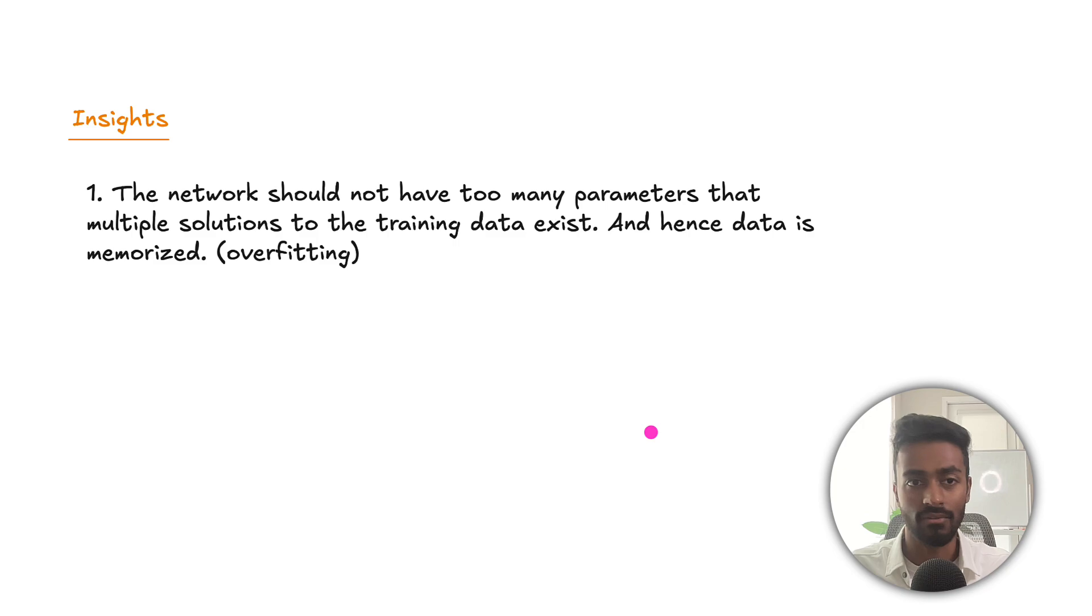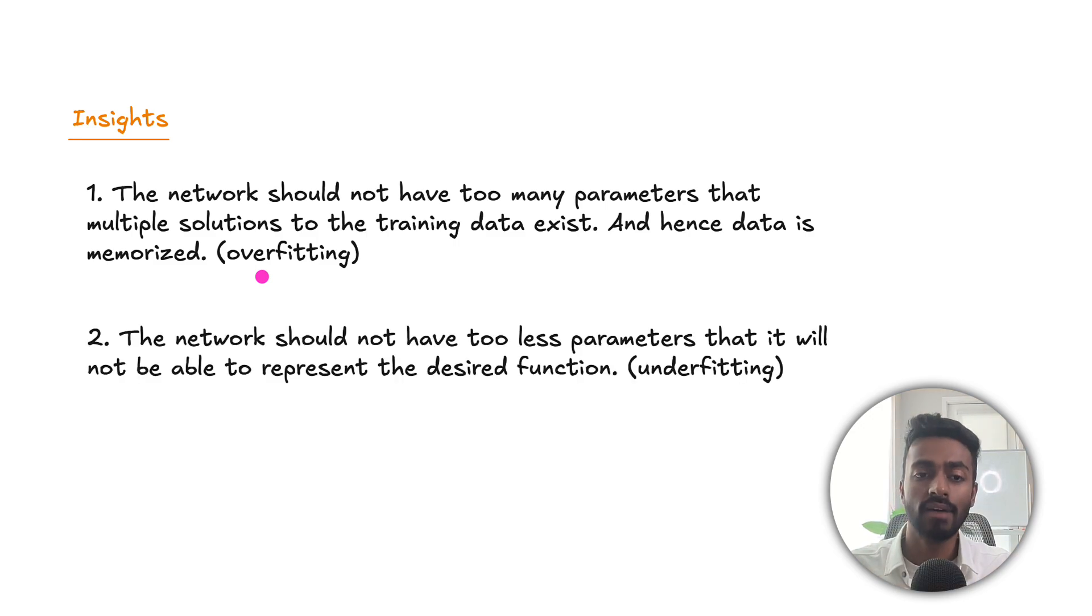And so in summary what we're seeing is that the network should not have too many parameters, that multiple solutions to the training data exist, and hence data is memorized. Classical case of overfitting. But then we should also have a network that doesn't have too few parameters, that it will not be able to represent the desired function. Aside from trying to fine-tune a regularization strategy, how do we effectively deal with this?